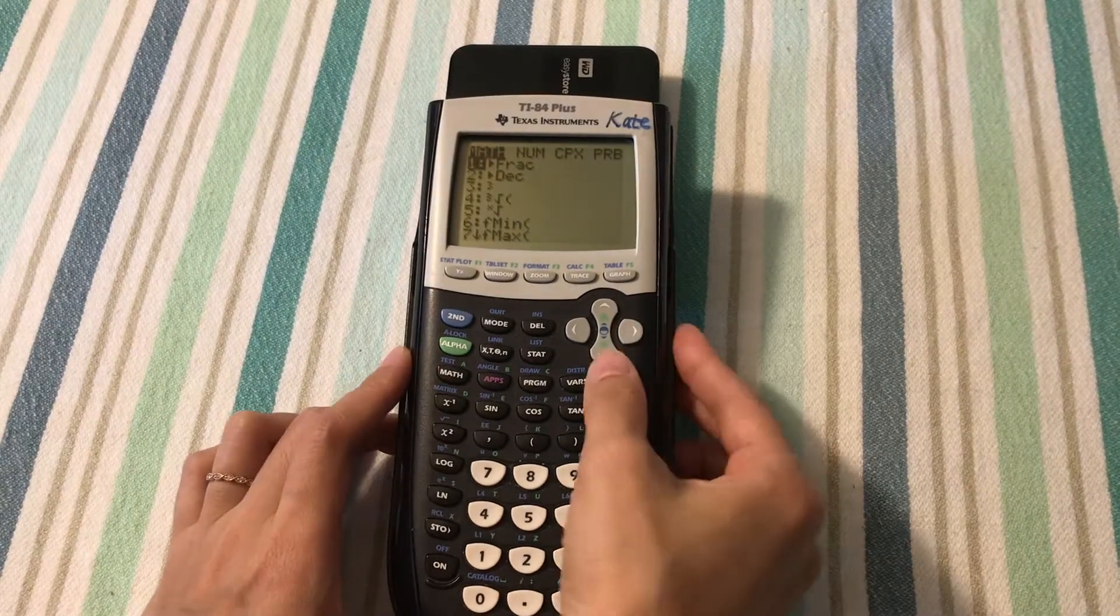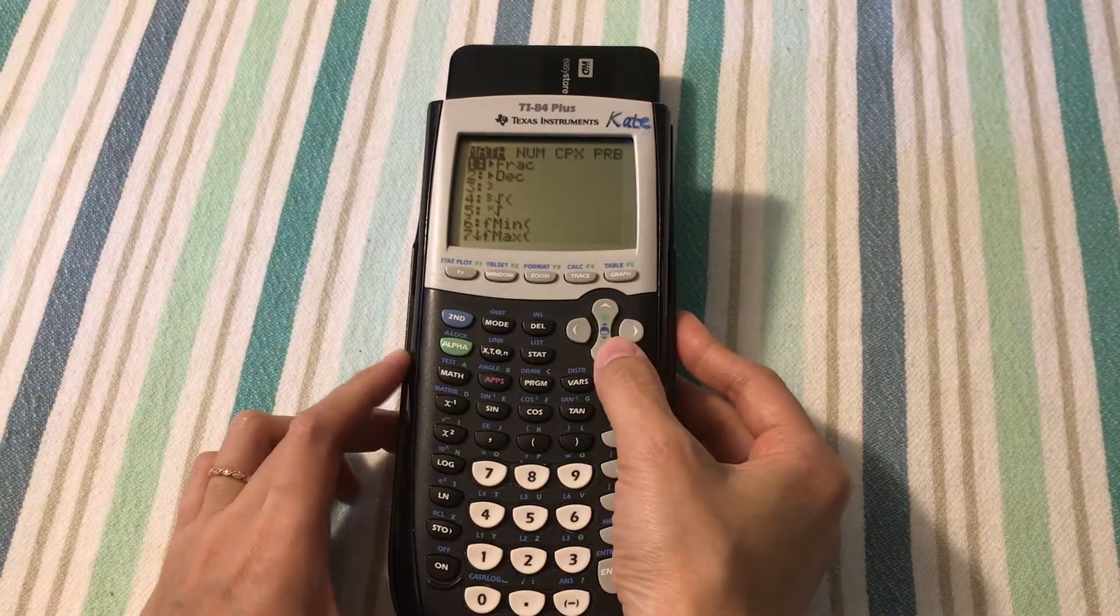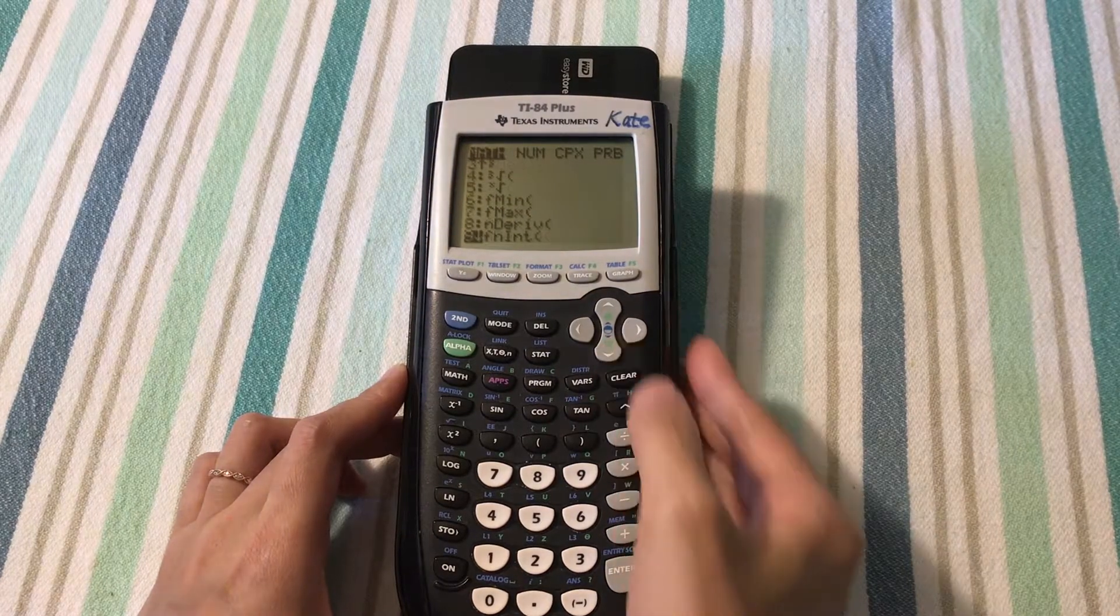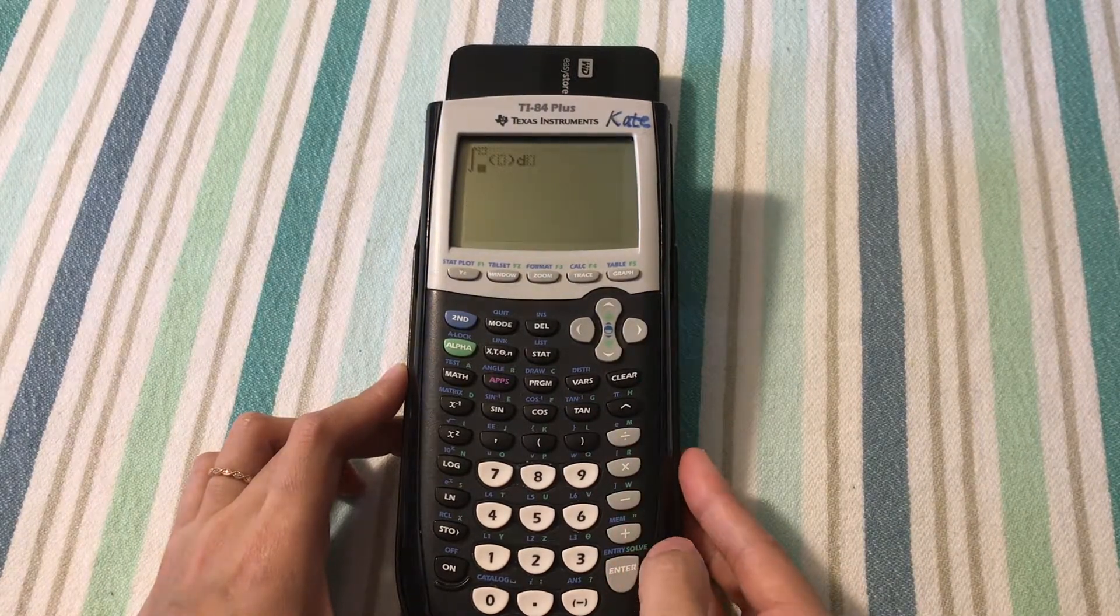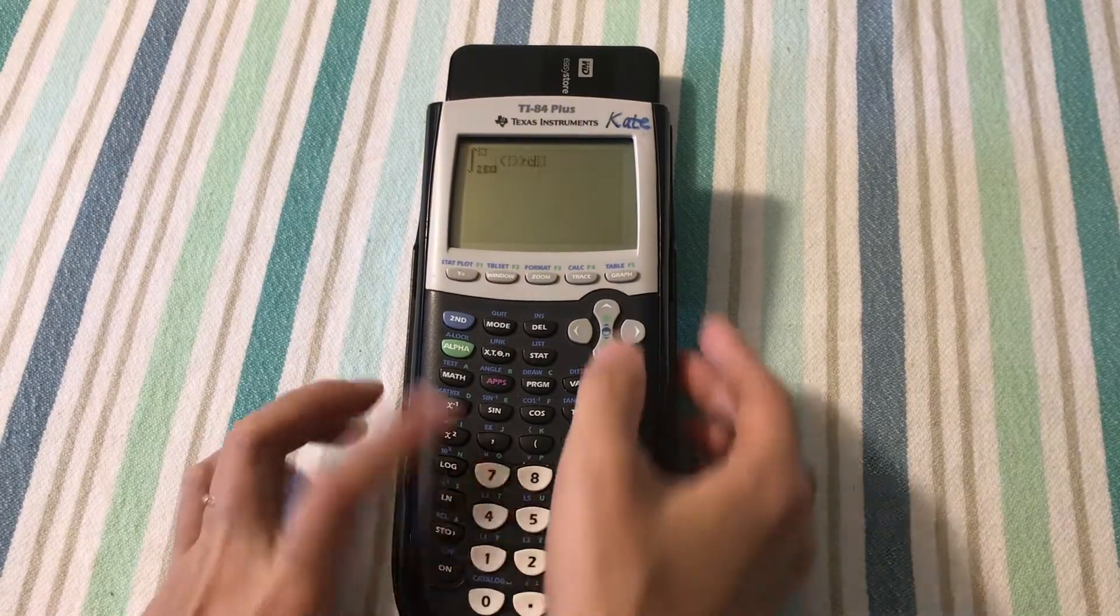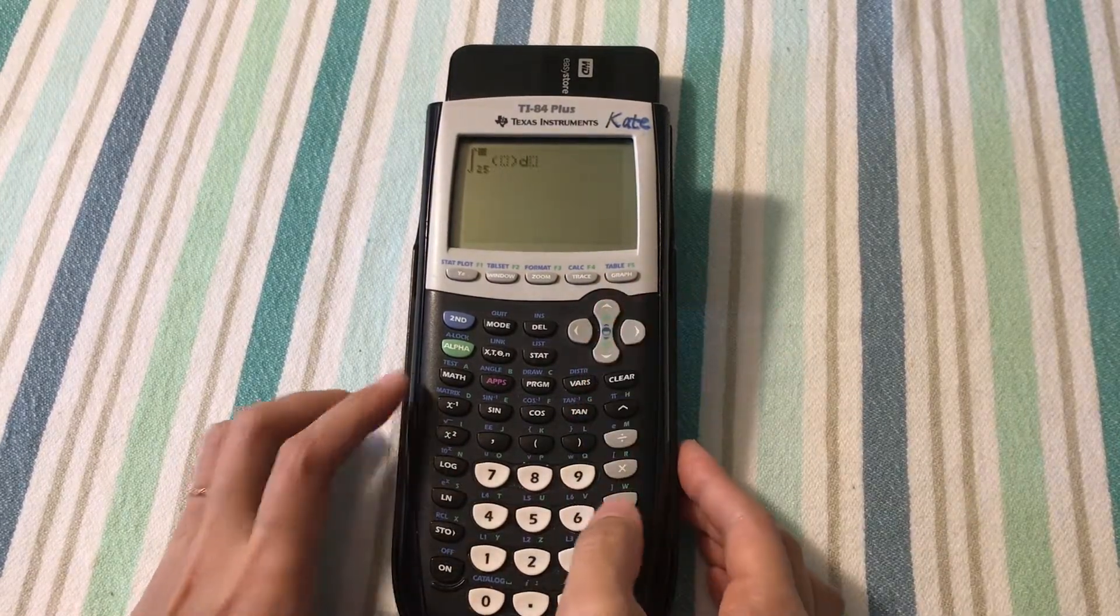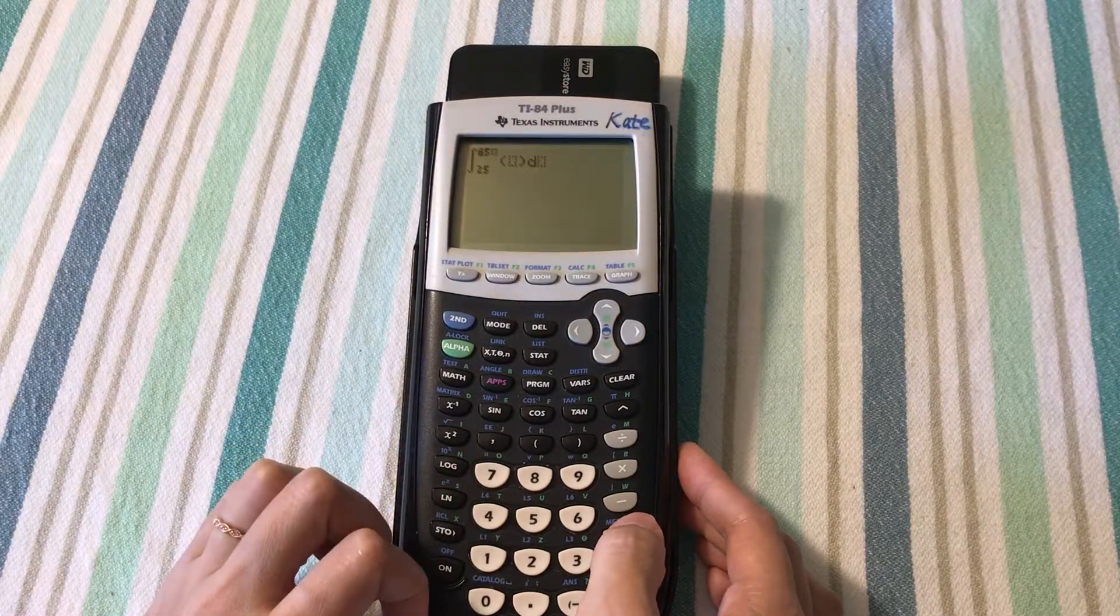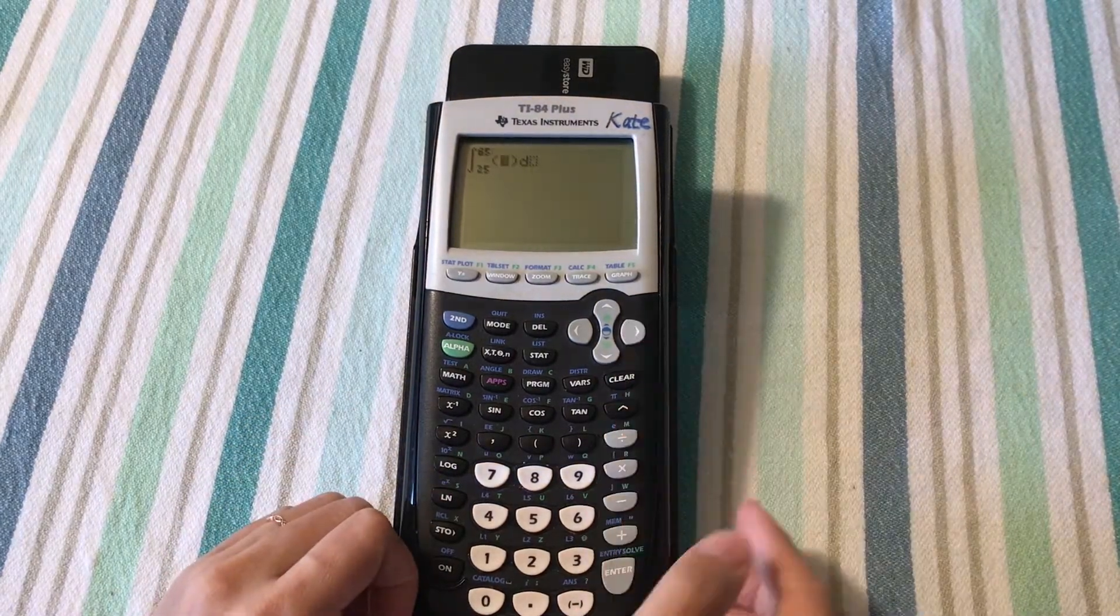First hit math, then scroll down all the way down. When you reach 9, that's finite integral. Then the lower limit is your starting temperature, that is 25 degrees Celsius in the problem statement.